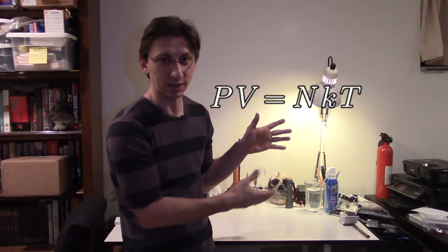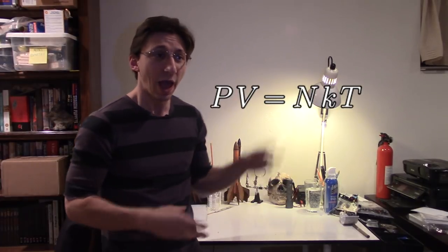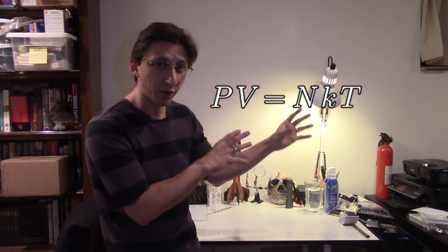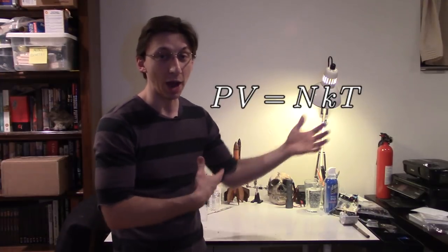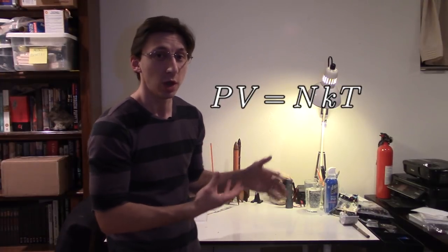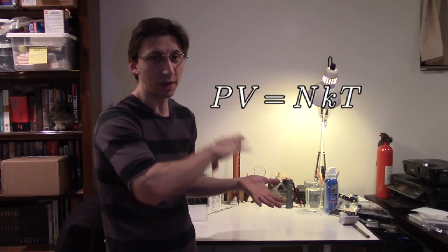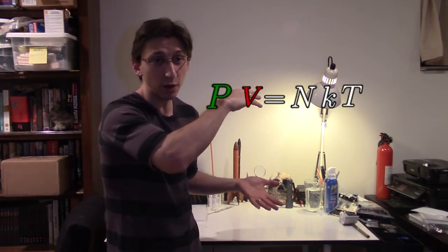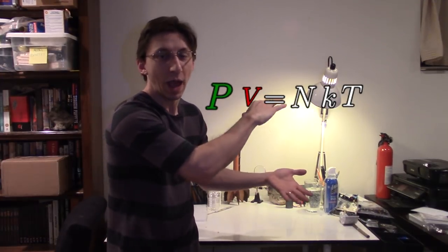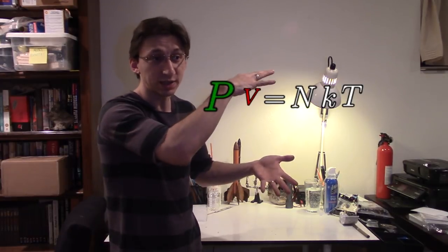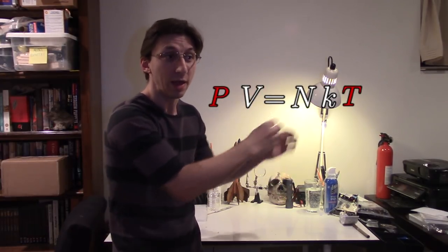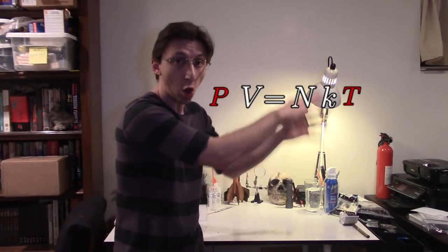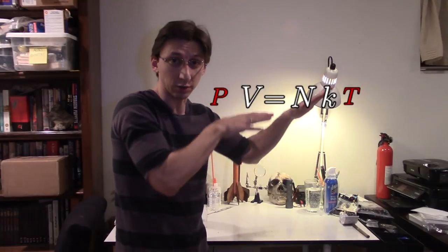K is just a constant in this case, and all of the other elements in this equation have to balance no matter what you do. So if you make the pressure bigger, the volume has to go down. Or if you make the pressure or the volume go down, the temperature also has to go down so that it stays balanced.